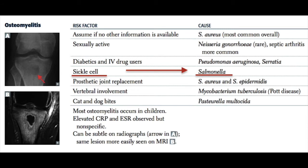Here is a table. Staph aureus is the most common cause of osteomyelitis in the general population. For a sexually active person, it could be Neisseria gonorrhea. Similarly, for a sickle cell disease patient, the most likely causal agent for osteomyelitis is Salmonella.